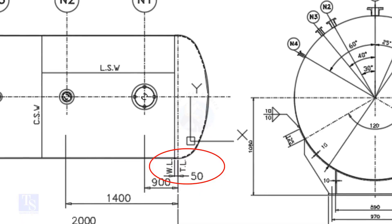What is TL and WL? TL stands for Tan Line and WL stands for Weld Line. The surface between the TL and the WL is called SF or Straight Face. Here, the straight face is 50mm.